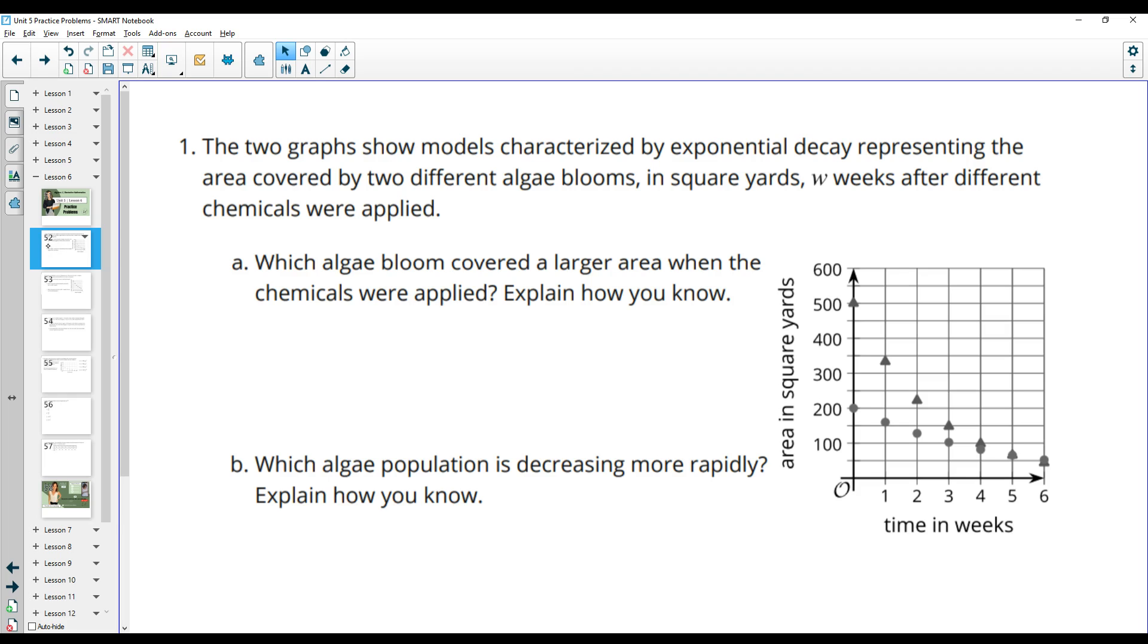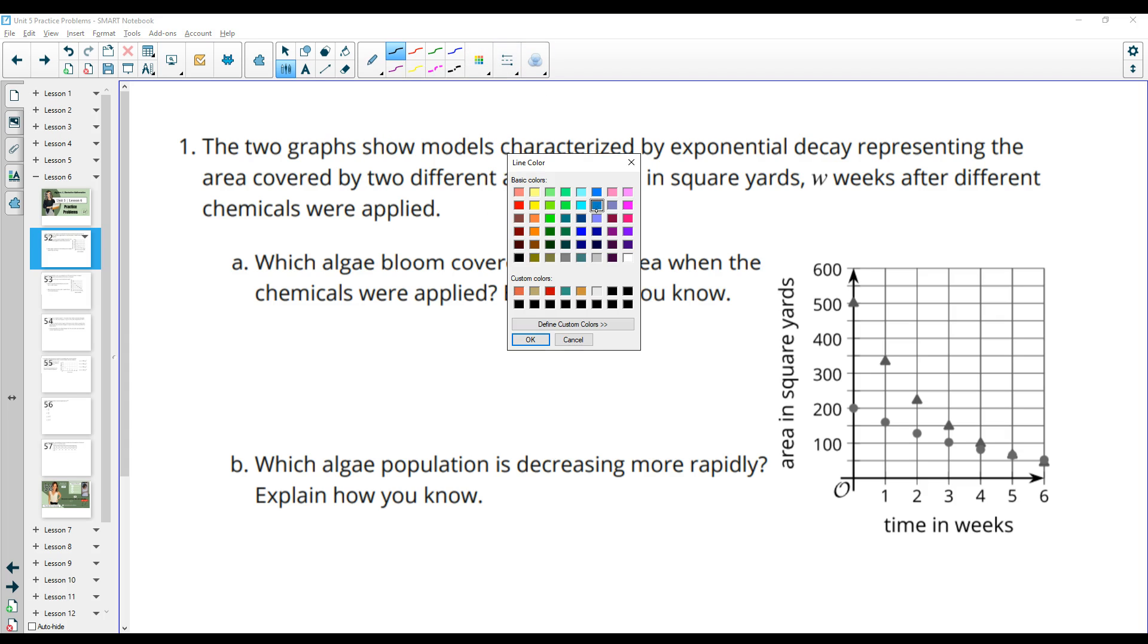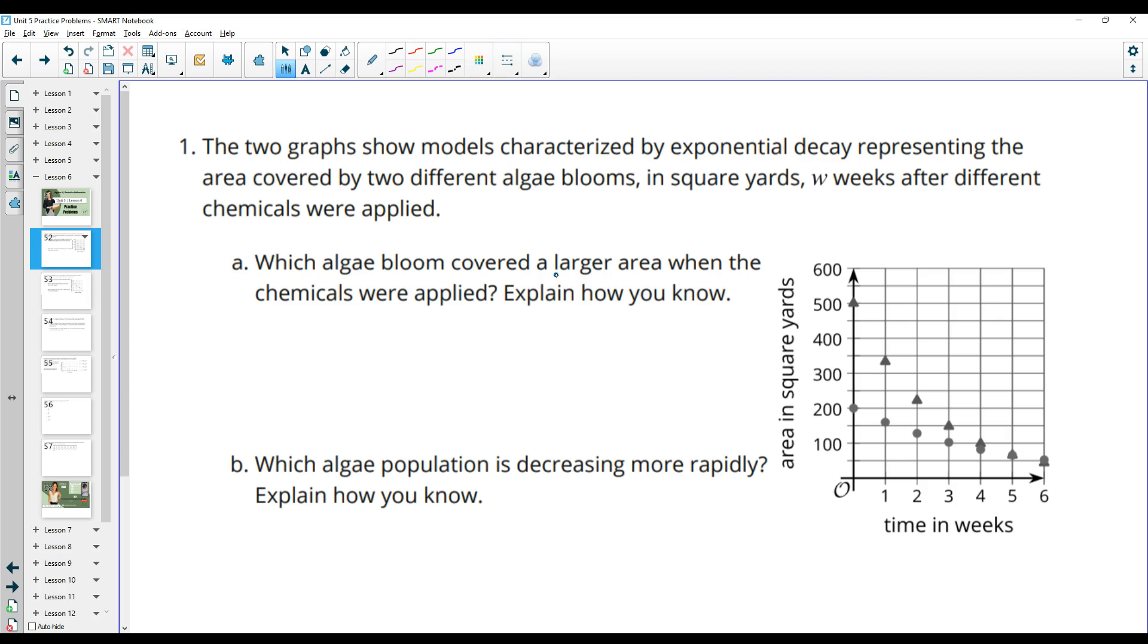Number one gives us two graphs that show models characterized by exponential decay representing the area covered by two different algae blooms in square yards, W weeks after different chemicals were applied. Part A asks us which algae bloom covered a larger area when the chemicals were applied, and then asks us how we know.